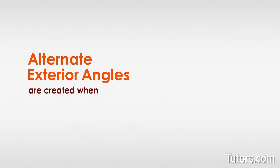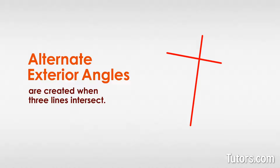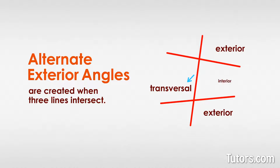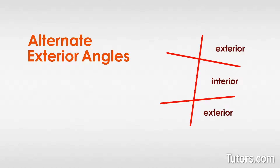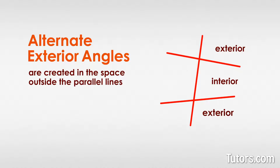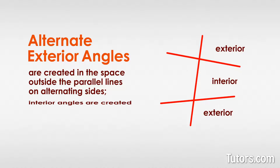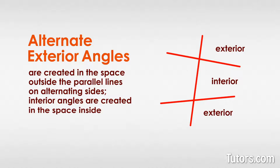Alternate exterior angles are created when three lines intersect. A line that crosses two or more other lines is called a transversal. Often two of the lines will be parallel, setting up some interesting angles with the transversal. When a transversal crosses two other lines, it creates an exterior and interior for the parallel lines. Alternate exterior angles are created in the space outside the parallel lines on alternating sides, while interior angles are created in the space inside the parallel lines.